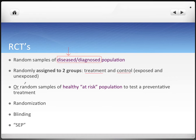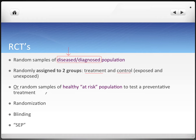Alternatively, we can take random samples of a healthy at-risk population, like we did with prospective cohort studies, to test a preventative treatment — to see if they have a low incidence of disease, for example, if the treatment is really effective.